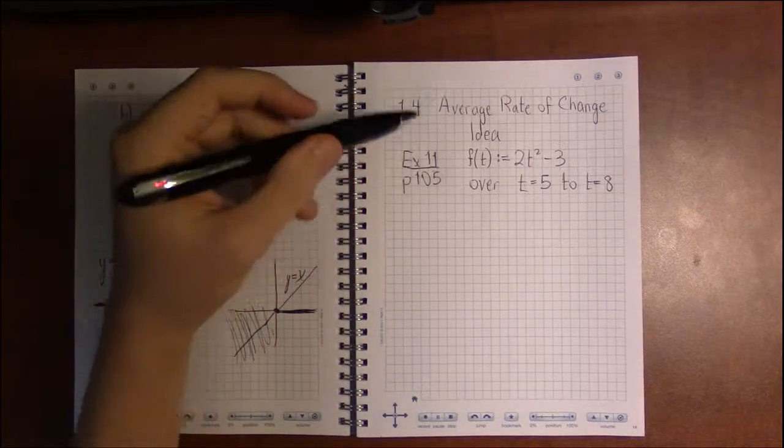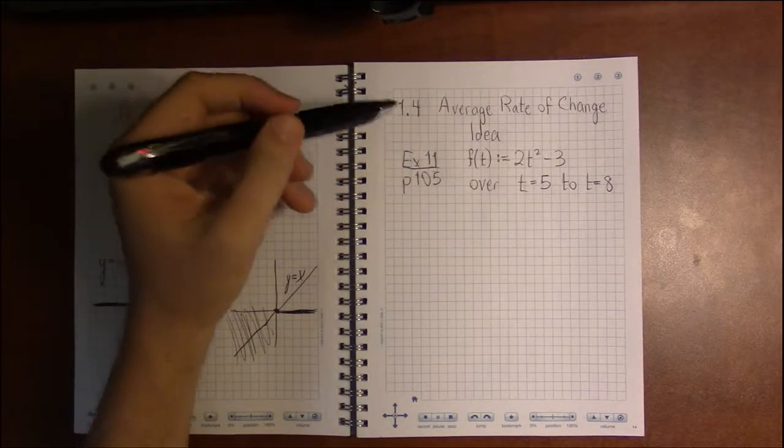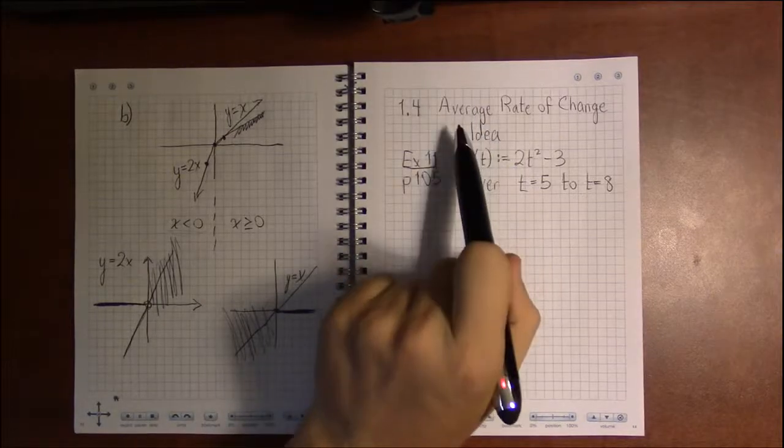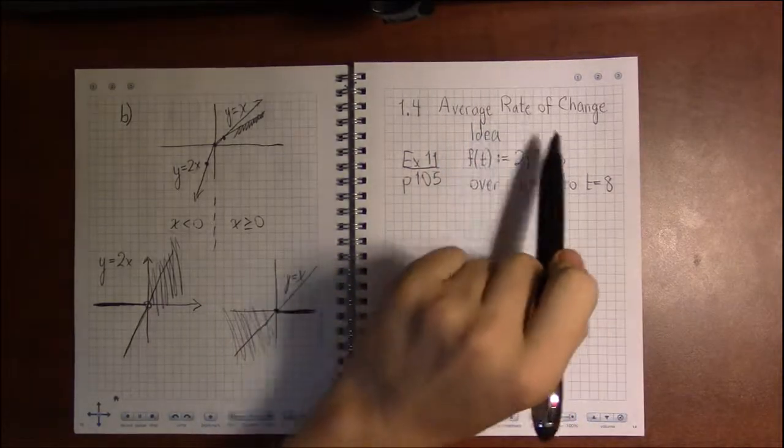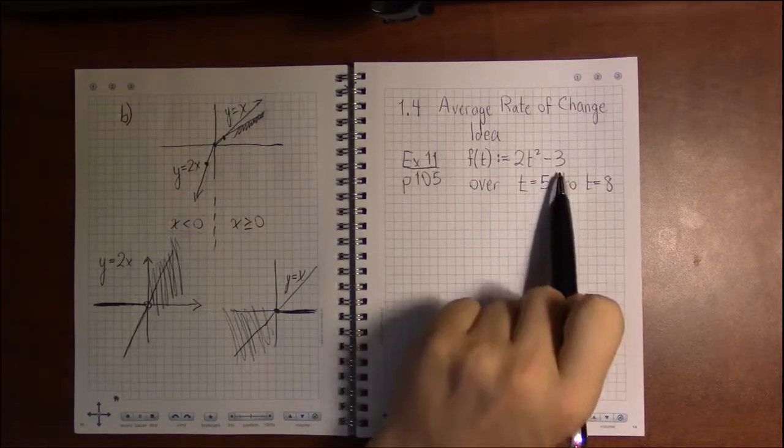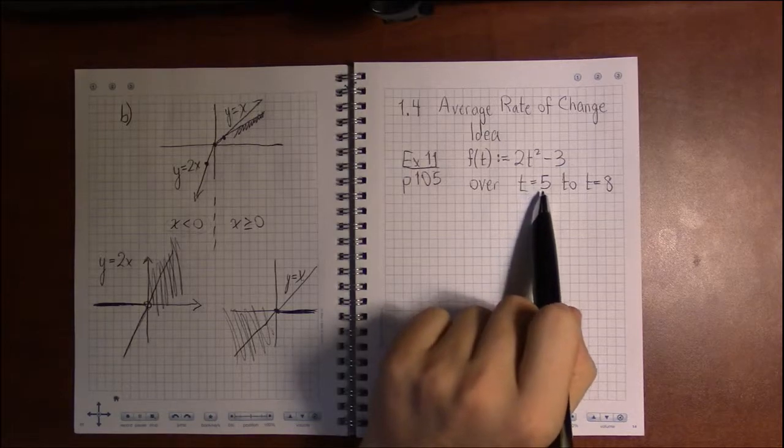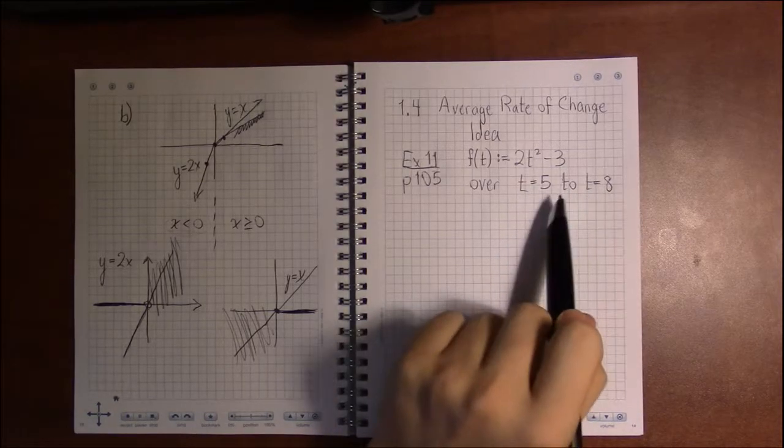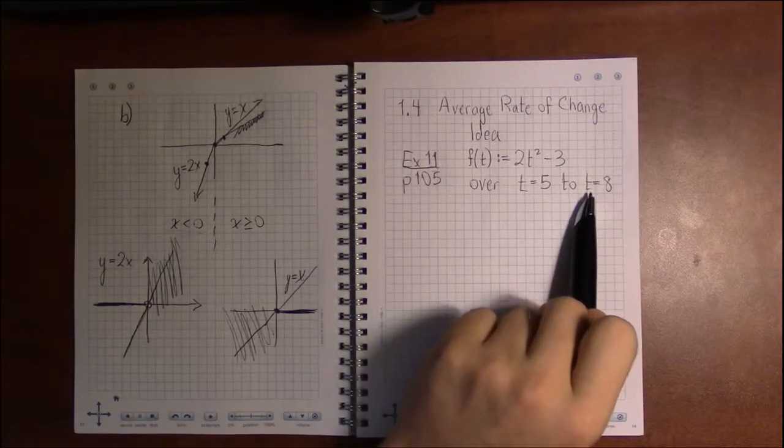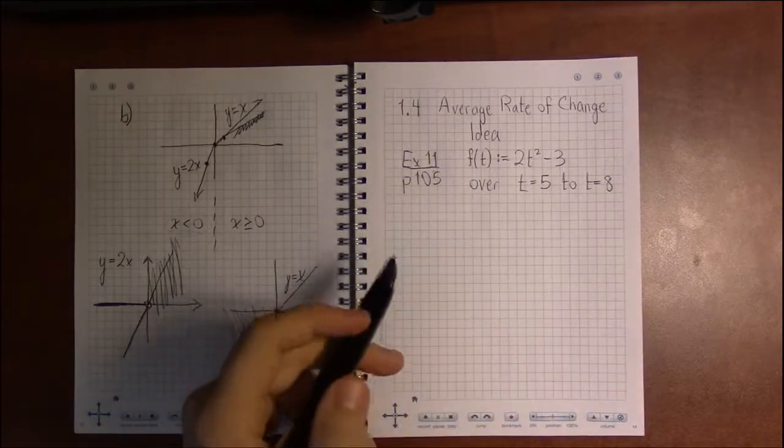Alright, there's one more idea I want to talk about in section 1.4 and that's the idea of an average rate of change for a function. The average rate of change of a function over some interval between two values of t is basically just the slope over these two points.